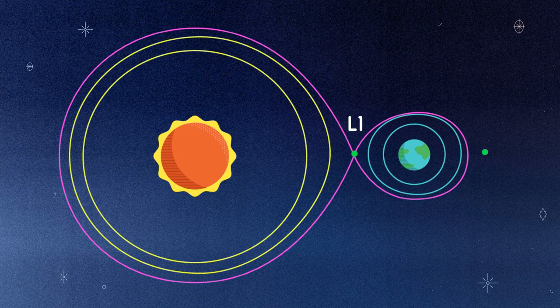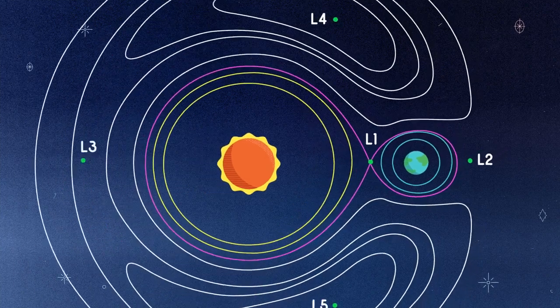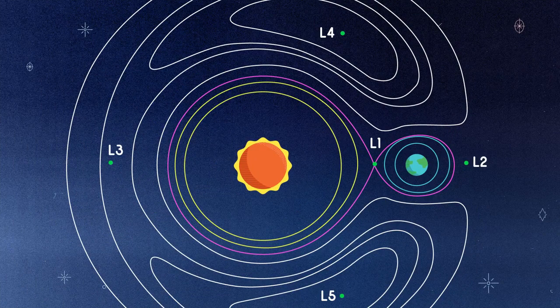This region, known as L1, is used extensively as a parking spot for telescopes, since they can hover at L1 using small amounts of fuel.